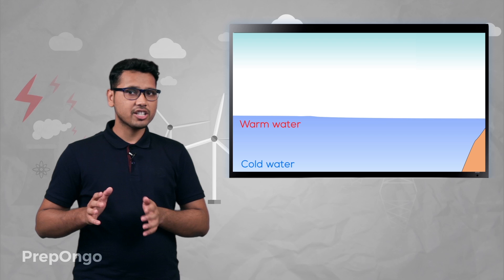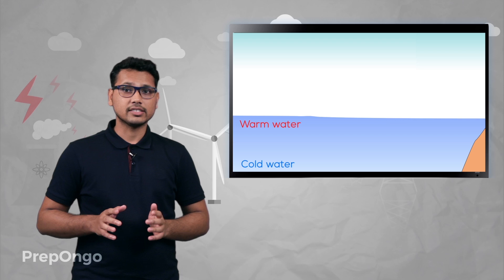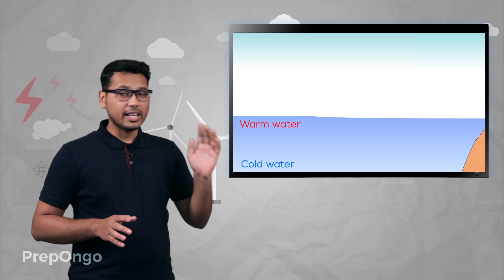This creates a temperature difference between the surface water and the water at a deeper level, which is around 20 degrees Celsius. We can use this temperature difference to generate electricity.